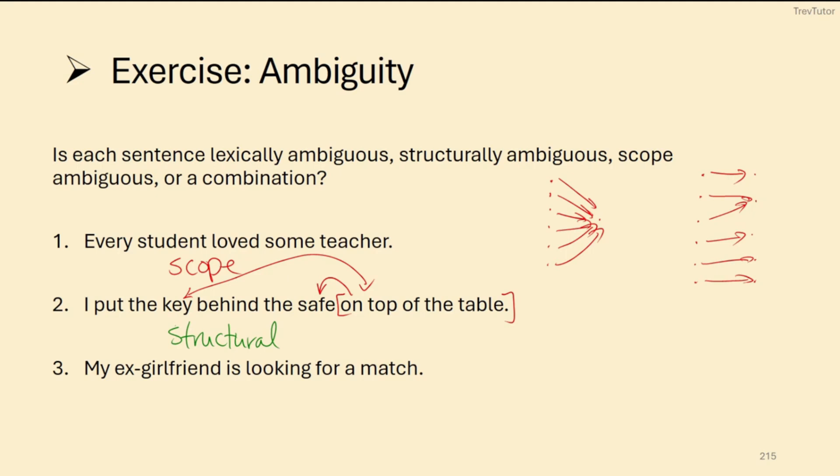Now for three, my ex-girlfriend is looking for a match. Match could mean a physical thing that lights on fire when you strike it. Or it could be a partner. So in this case, this is lexical ambiguity. There is an uncertainty of what match could refer to.